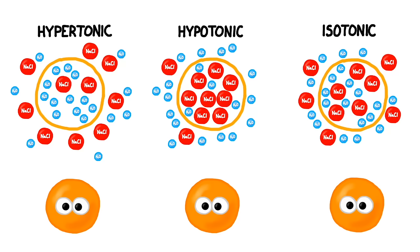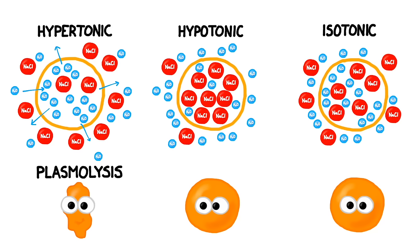In this first scenario, the liquid surrounding the cell has many molecules of solute in it. This liquid is hypertonic compared to the cell — it has a much higher concentration of solute particles and a much lower concentration of water. Unfortunately, the solute molecules can't pass through the membrane to reach equilibrium, but water molecules can. The molecules of water on the outside of the cell are going to be obstructed from passing through by the many molecules of solute. However, the molecules on the inside have much less solute getting in the way. Water will begin rushing out of the cell. Some water will come in, but the net movement of the water molecules will be outwards, and the cell will shrink. We call this cell contraction plasmolysis.